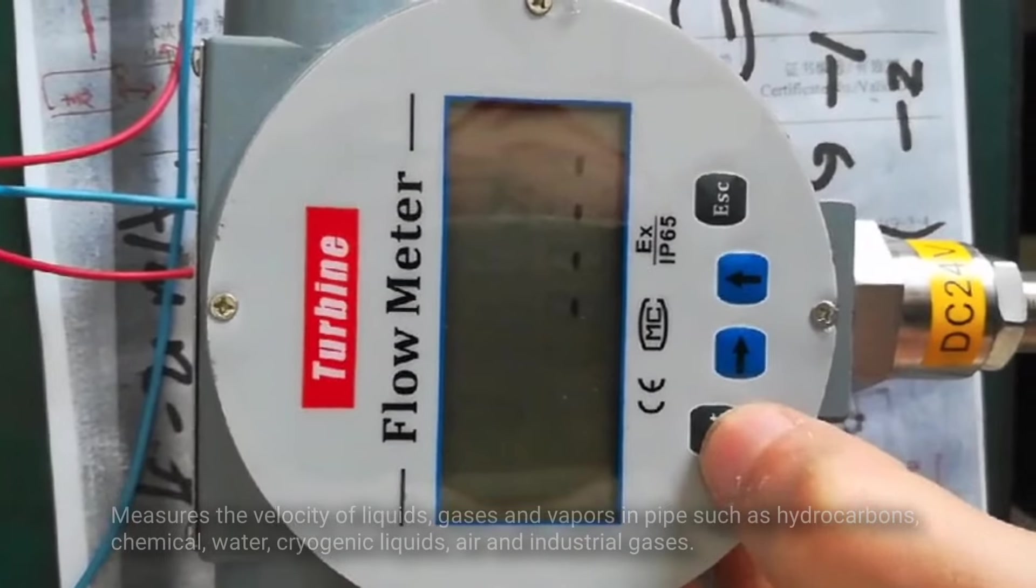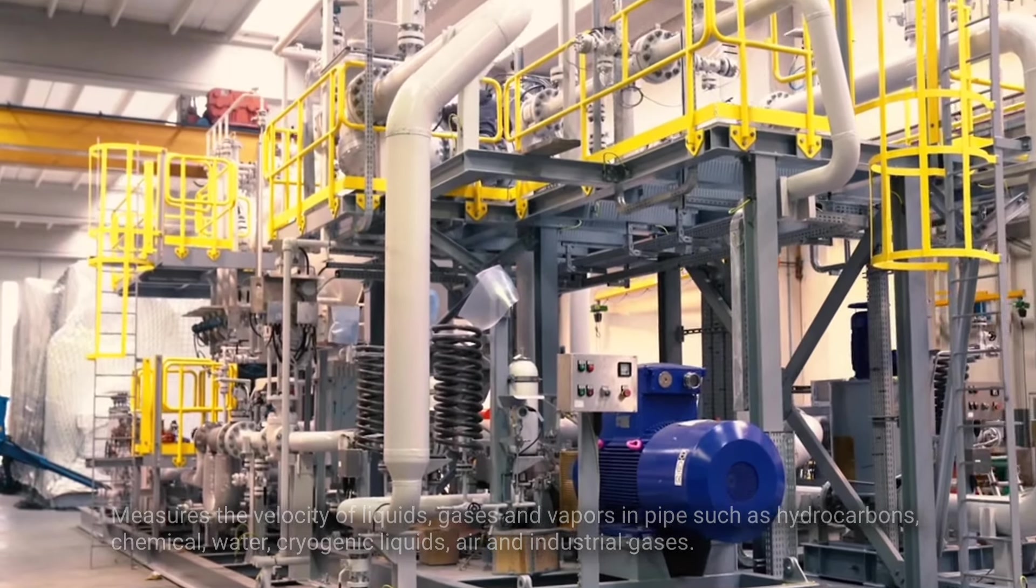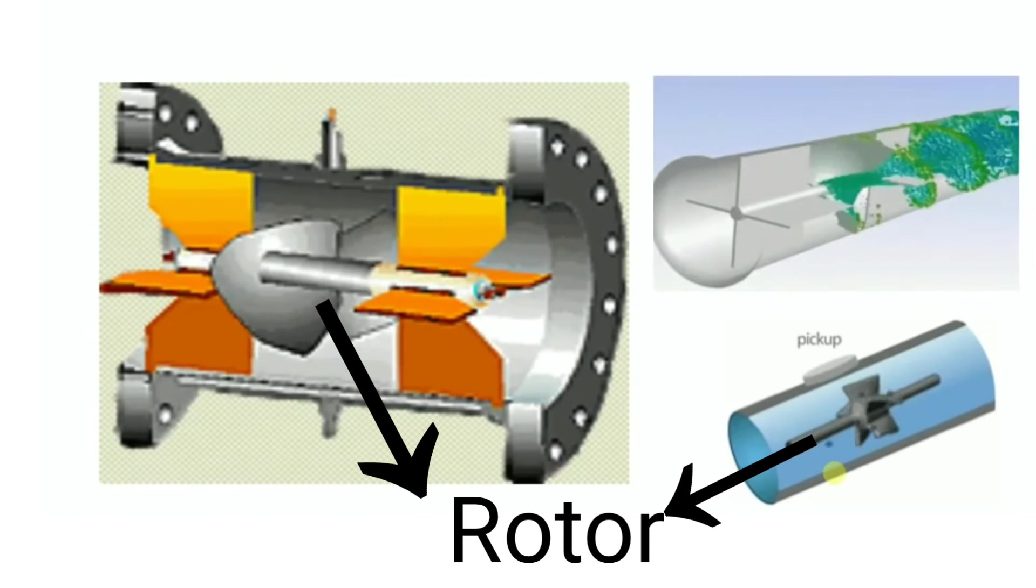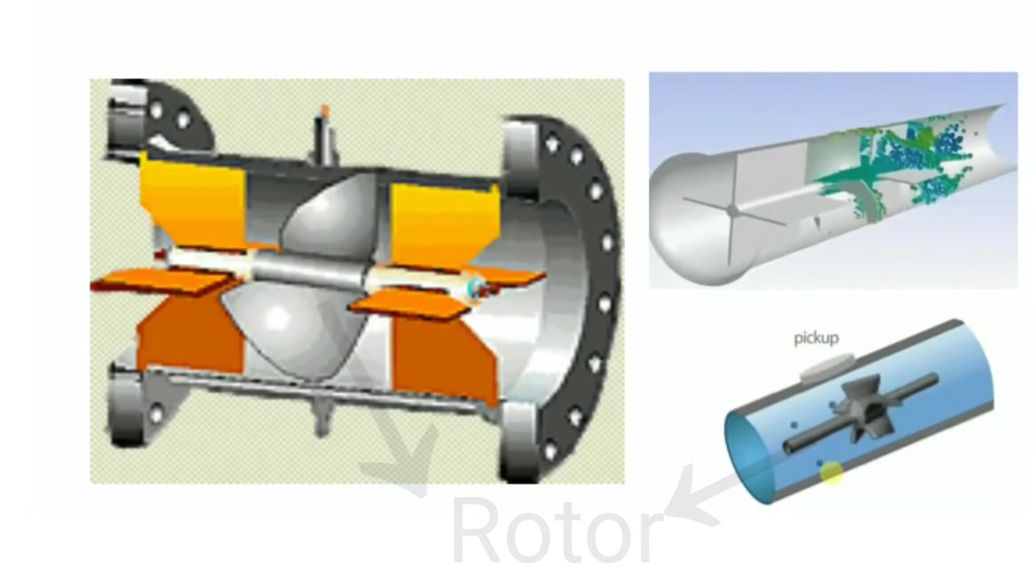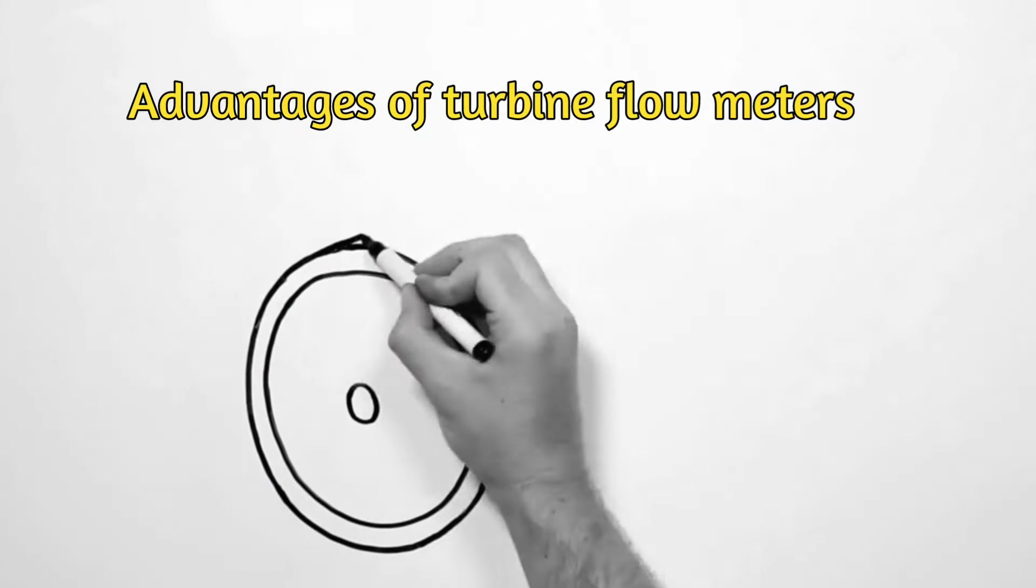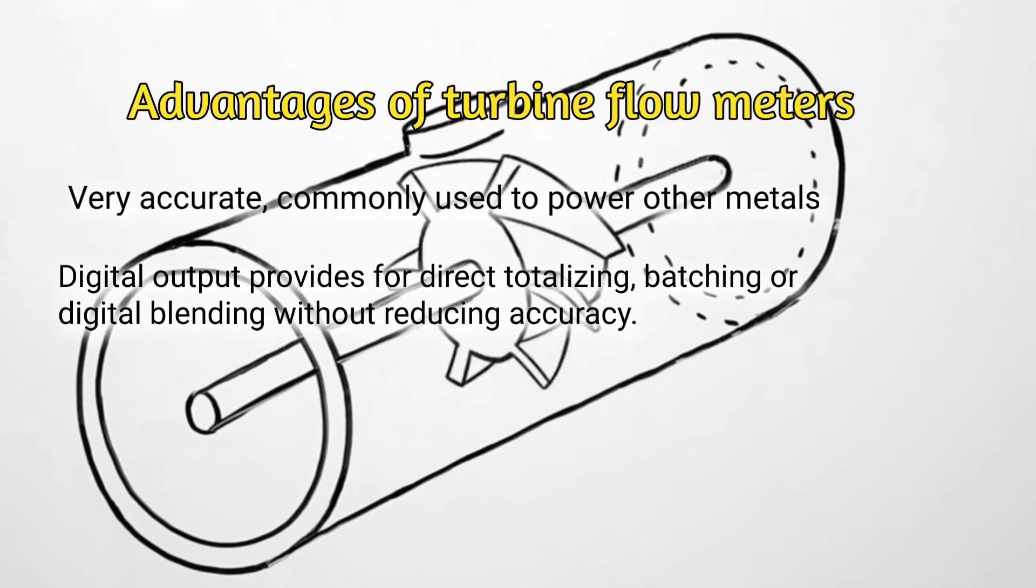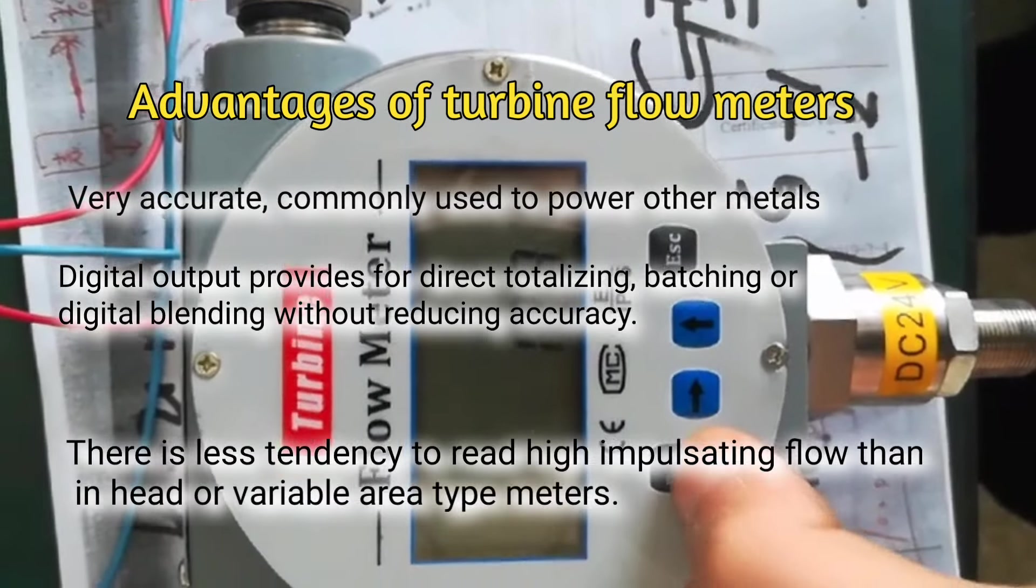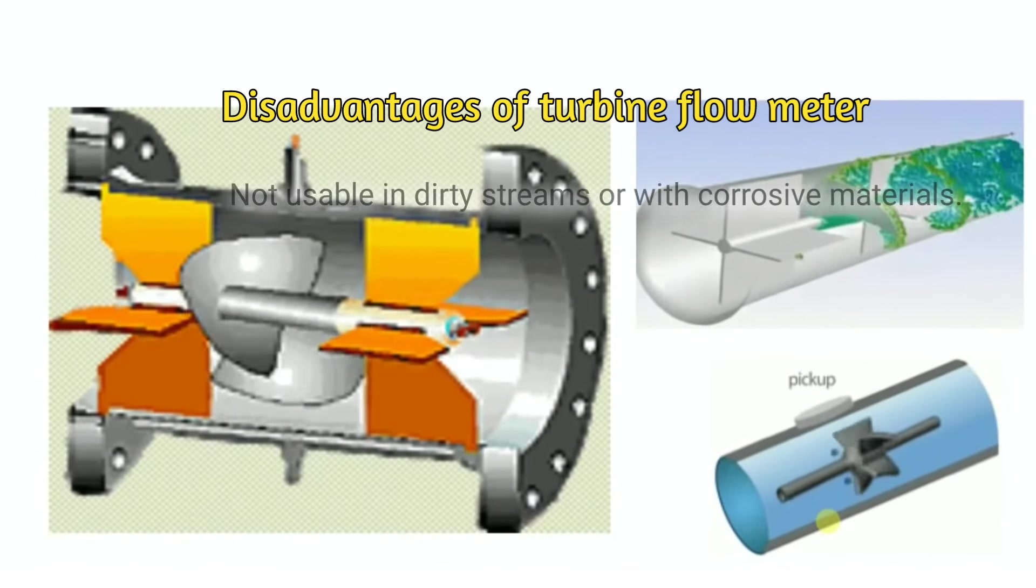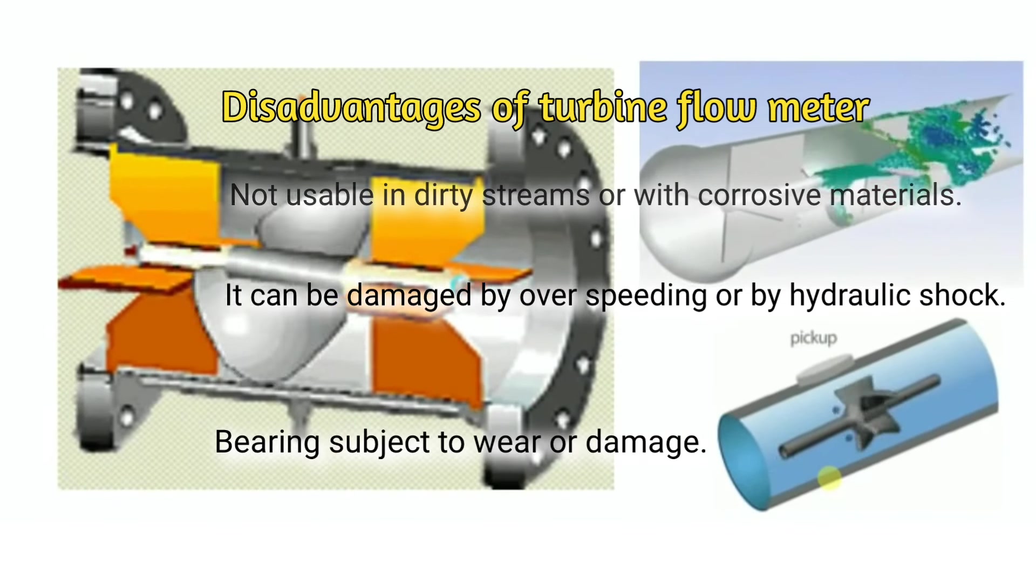Turbine flow meters measure the velocity of liquids, gases, and vapors in pipes, such as hydrocarbons, chemicals, water, cryogenic liquids, air, and industrial gases. They consist of a multi-bladed rotor mounted at right angles to the flow and suspended in the fluid stream on a free running bearing. The diameter of the rotor is slightly less than the inside diameter of the flow meter. Speed of rotation of rotor is proportional to the volumetric flow rate. Advantages: very accurate, commonly used to power other meters, digital output provides for direct totalizing, batching, or digital blending without reducing accuracy, there is less tendency to read high impulse flow than in head or variable area type meters. Disadvantages: not usable in dirty streams or with corrosive materials, it can be damaged by over speeding or by hydraulic shock, bearing subject to wear or damage.